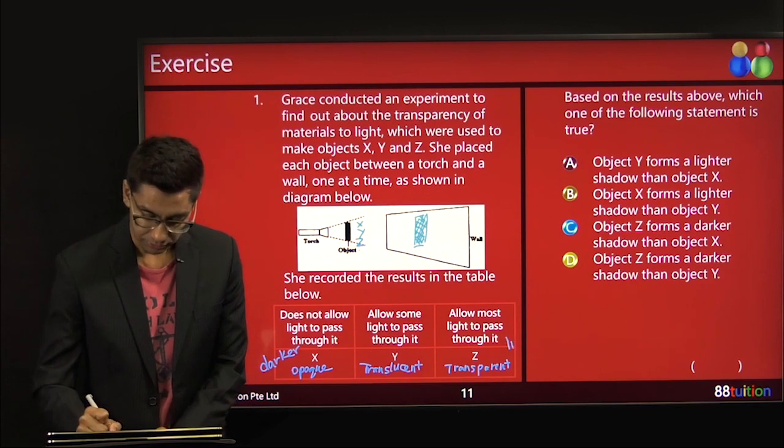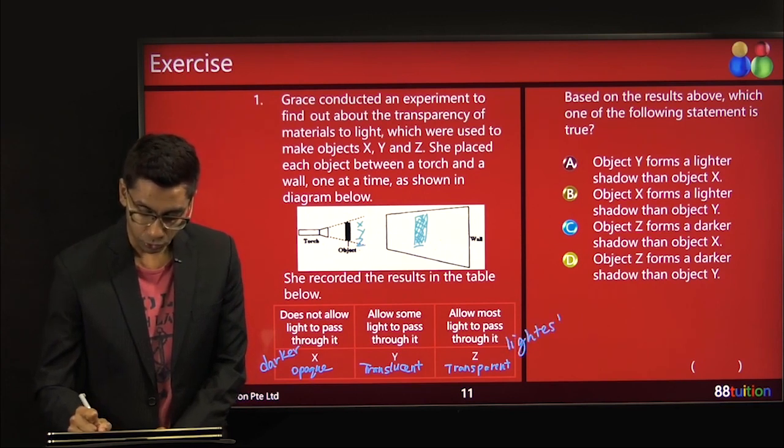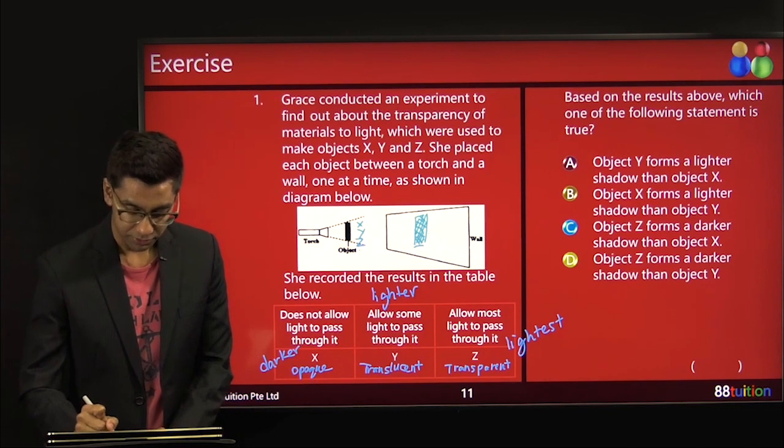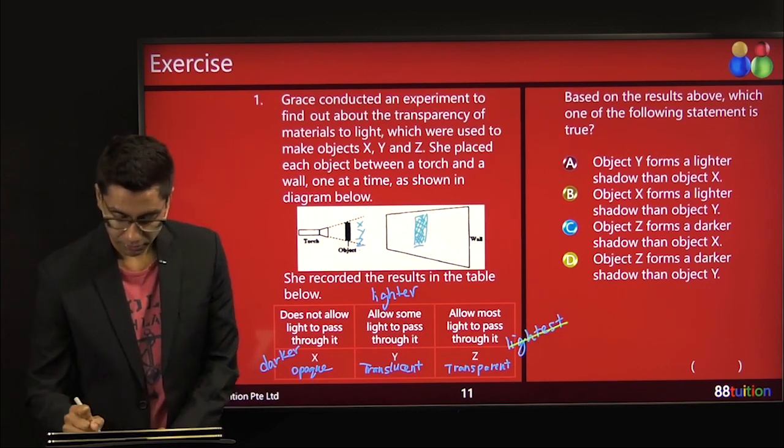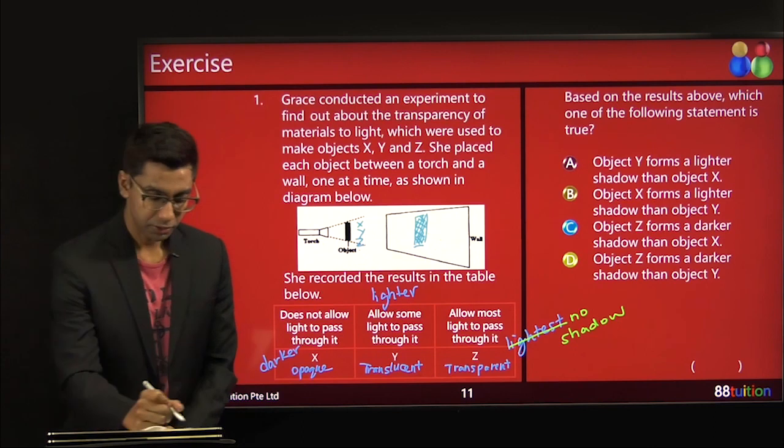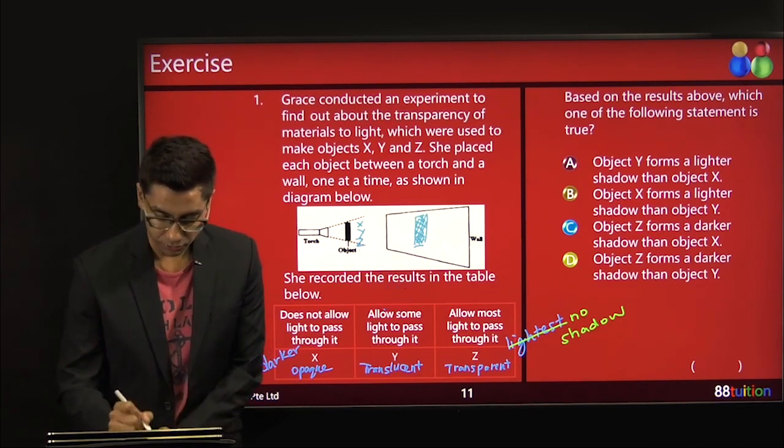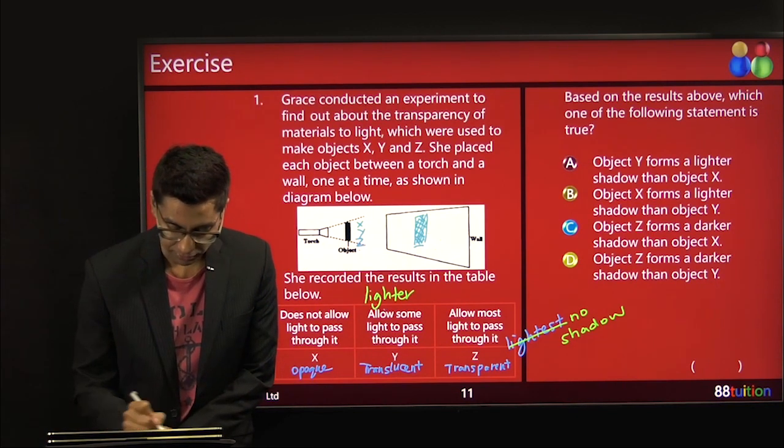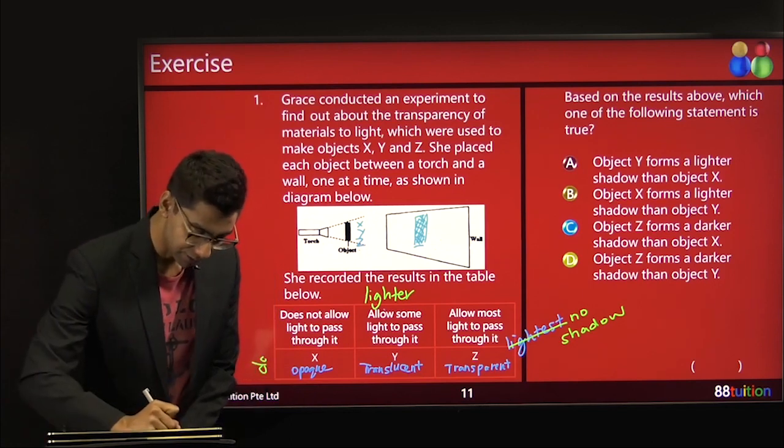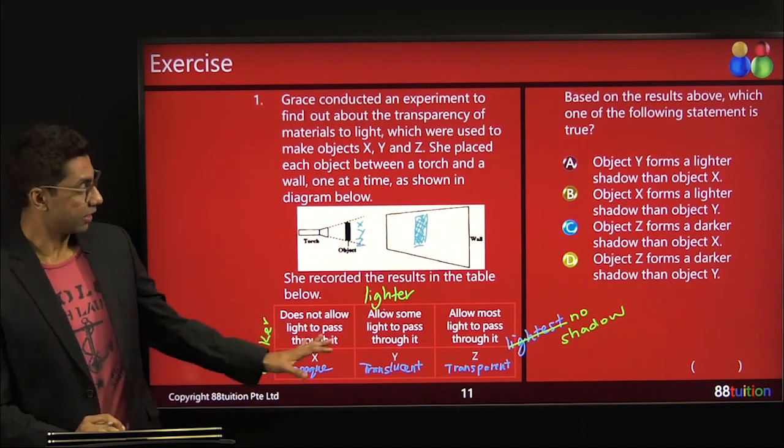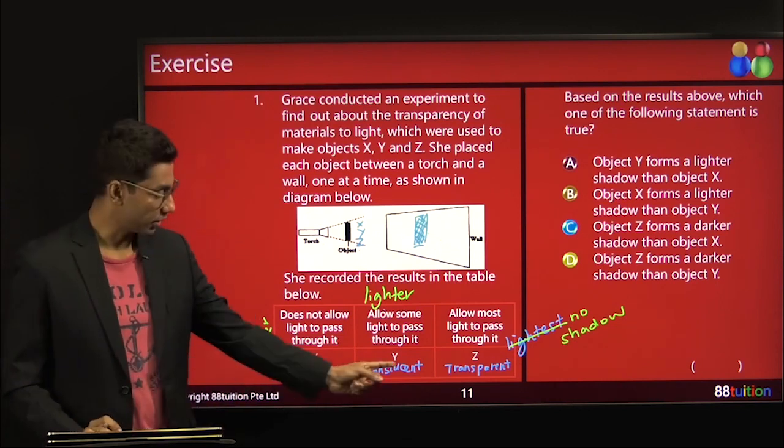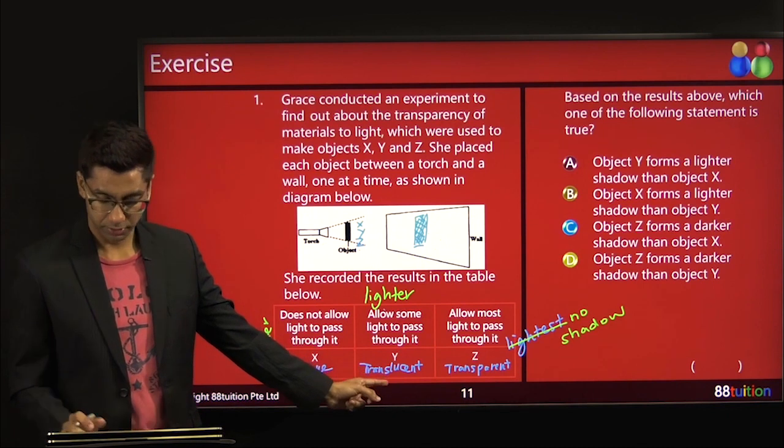This one will be lighter. Or lightest. Or no shadow. Or maybe this is lighter. And then this one is, let's try this way. No shadow. Maybe. Because it's totally transparent. So no shadow. So let me use some colors to actually let you see it better. This is lighter. And this is darker. Better? So now we can have all the information and then we look at the answers again. Object Y forms a lighter shadow. Object Y is here. Then object X. Yes, it's true.